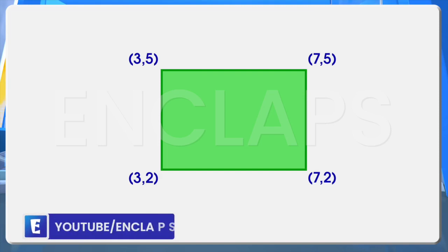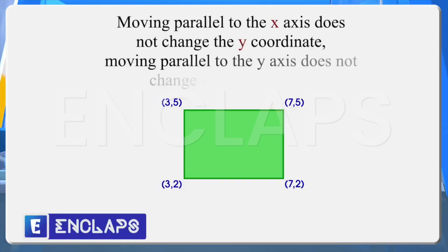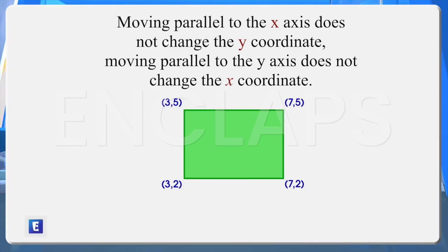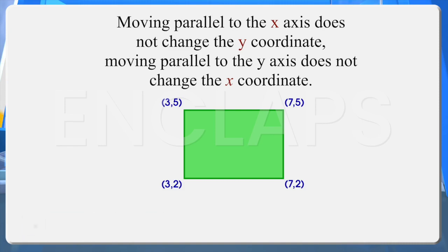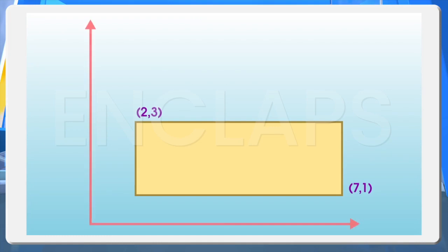Now you have all four coordinates of the rectangle. Look at them all together. Do you find anything special? What is the principle used to find the coordinates here? Moving parallel to the x-axis does not change the y-coordinate. Moving parallel to the y-axis does not change the x-coordinate. Consider another example. Here too, the sides of this rectangle are parallel to the axis.